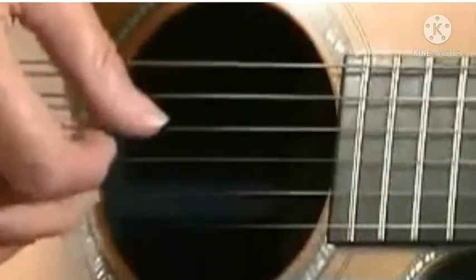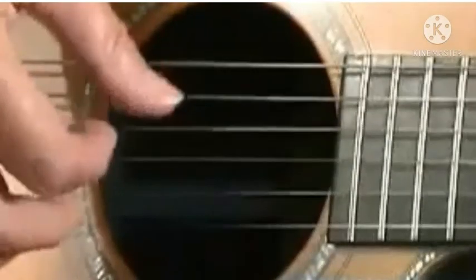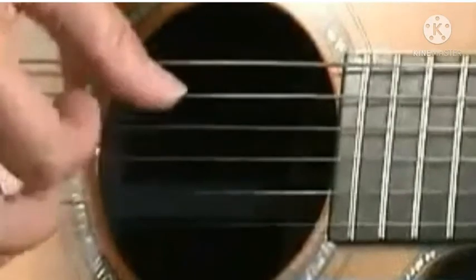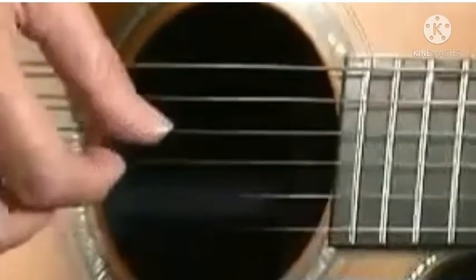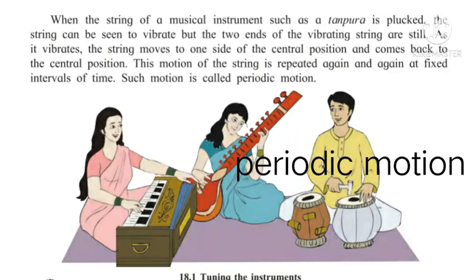When the string of a musical instrument such as a tanpura is plucked, the string can be seen to vibrate, but the two ends of the vibrating string are still. As it vibrates, the string moves to one side of the central position and comes back to the central position. This motion of the string is repeated again and again at fixed intervals of time. Such motion is called periodic motion.